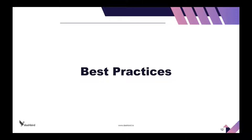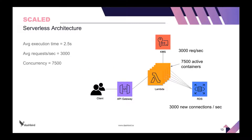Let's look at the same architecture, but what we can do better with a real-world scenario. Imagine 3,000 concurrent requests where each execution time is 2.5 seconds — maybe it's something really slow. That would mean this small architecture has 3,000 new connections to your RDS database, which is a really big load for a relational database and might cause it to slow down. API Gateway is also quite expensive at that point. You would also have 7,500 active containers. So there are problems around scaling here that affect not just Lambda functions but other services in your infrastructure.